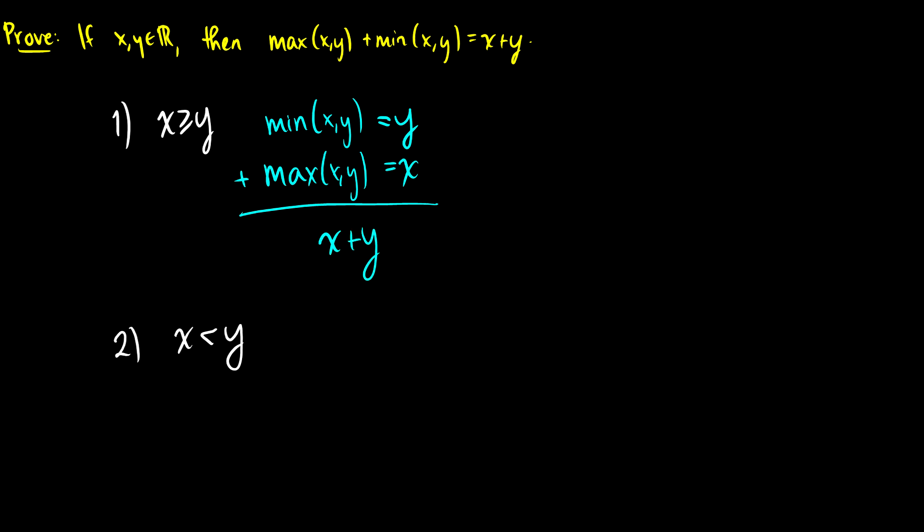Now in the second case here, well the minimum of x and y, x is always strictly less than y, so it's going to be x here. The max of x and y, well y is greater than x, so y is going to be the max. And if we add the two together, we're going to get x plus y.